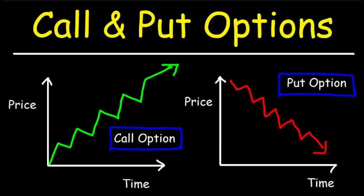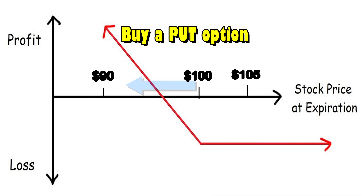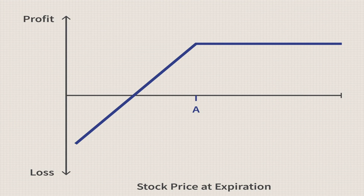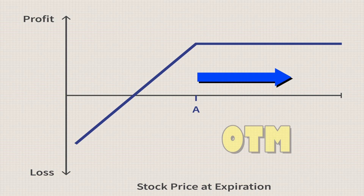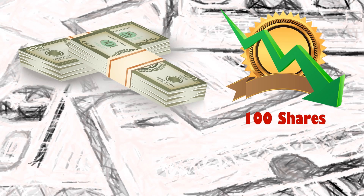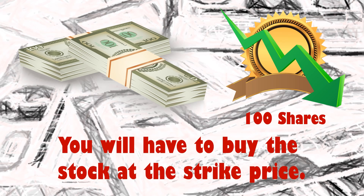Puts are the exact opposite of calls. You typically buy a put option if you think the price of the stock will be below the strike price — in the money — before expiration. If the stock falls below the strike price, you can buy the stock at the market price and then exercise the option and sell it at the higher strike price for a profit. Similar to calls, if the option price increases as you approach expiration, you can sell the option for a profit, closing out your position. You would typically sell a put option if you believe the stock will remain above the strike price, or out of the money, at expiration. When this occurs, the option will expire worthless and you get to keep the full amount you sold the option for, or the option premium. In order to sell a put, you must have enough cash in your account to be able to buy 100 shares of the stock at the strike price. If the price of the stock falls below the strike price, it is likely the option will be exercised and you will have to buy the stock at the strike price.